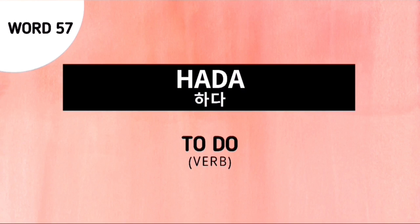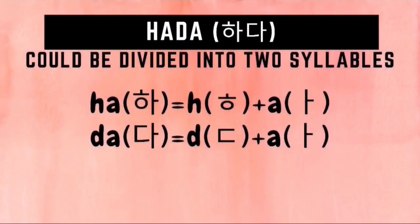Hada means to do. How do we write Hada in Hangul? This is composed of two syllables. For the first syllable Ha, we need to draw a H character and an A character. For the second syllable Da, we need to draw a Digeut character followed by an A character.